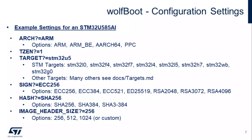Here's an example of some of the settings. The architecture is ARM. The TZEN, which is TrustZone enabled, is set to one. The target is the STM32 U5. This example uses ECC 256-bit for signing, but we also support 384-bit, 521, ED25519, RSA 2048, 3072, and 4096. Those are all asymmetric algorithms you can use for signing firmware.